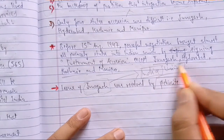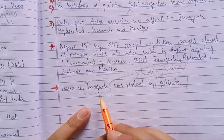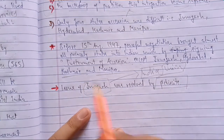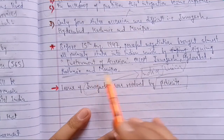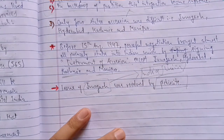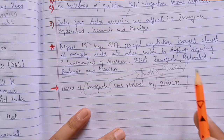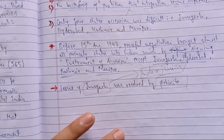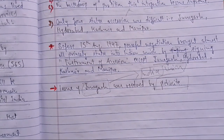The story of Junagadh is not much discussed in the NCERT book. In the next video, we shall be taking up Kashmir, Manipur, and Hyderabad - the circumstances under which the government was successful in merging these three princely states into the Indian union. Till then, thank you.